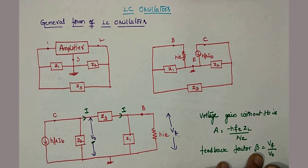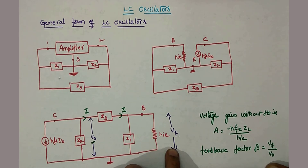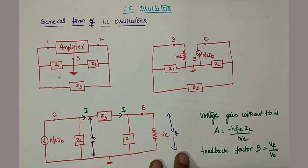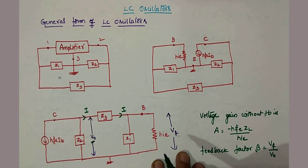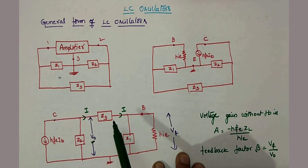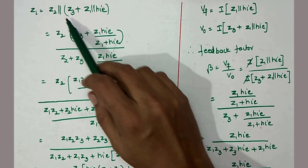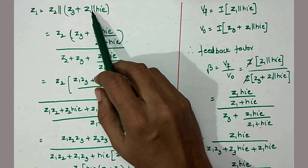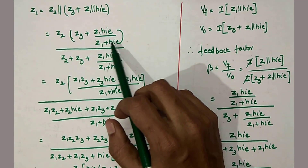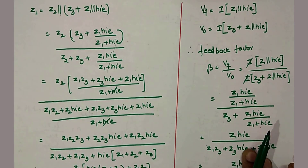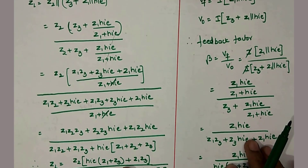The feedback factor beta = VF / V0, where VF is the output of the feedback network and V0 is the input to the feedback network. ZL = Z2 in parallel with (Z3 + Z1‖HI). Z1 in parallel with HI equals Z1·HI / (Z1 + HI). After substituting and simplifying, you get the final expression for ZL.